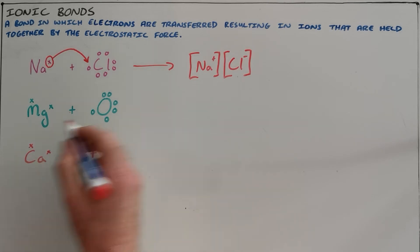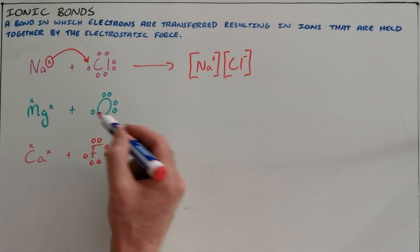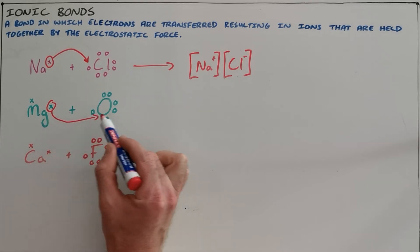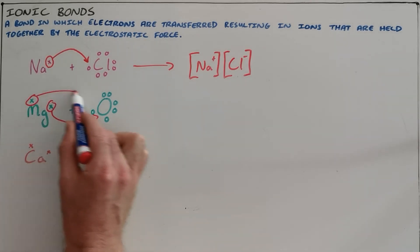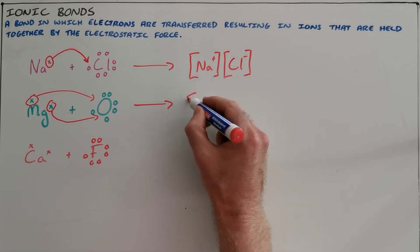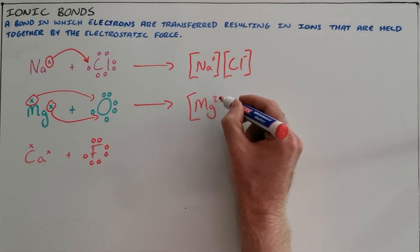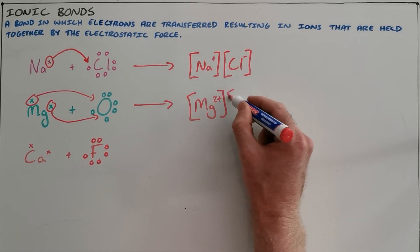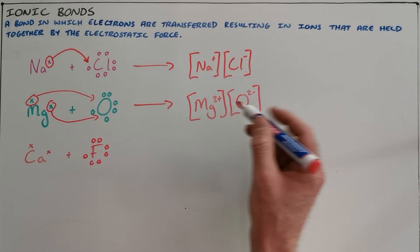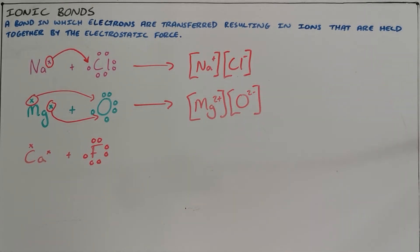The same can be said for magnesium oxide, except now that oxygen needs two more electrons but fortunately magnesium has two electrons. So both of those electrons are transferred to oxygen, which leaves the magnesium with a charge of plus two, oxygen with a charge of minus two, and as a result they are held together by that electrostatic force.